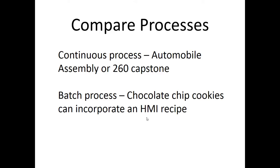We had a quiz — be sure you understand what was going on with the last quiz. We talked about processes from the reading: a continuous process is like an automobile assembly line where the car moves through sequential operations. Our ELTE 260 capstone will have a continuous process where one thing happens after the next. A batch process, on the other hand, might control the number of chocolate chips in cookies, and we can incorporate an HMI to change the recipe — more dough, less dough, more cookies, less cookies.